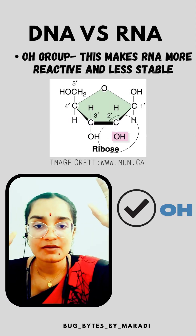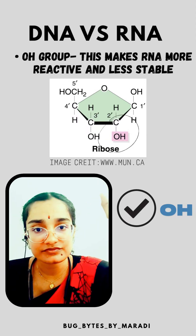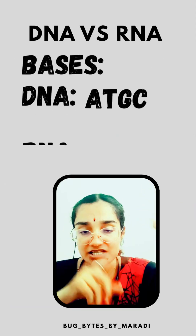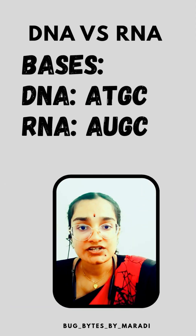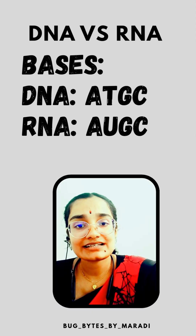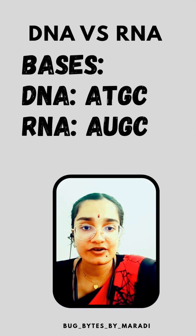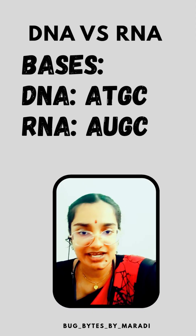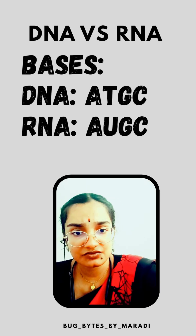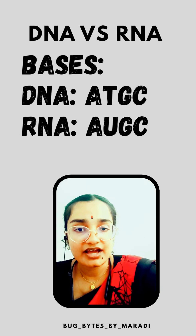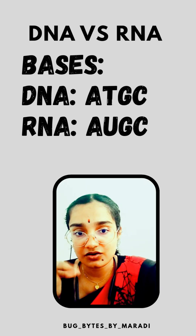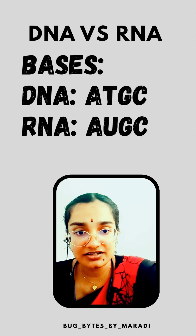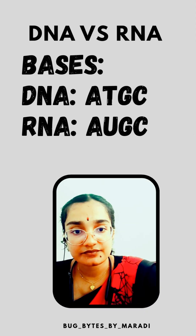Now, what are the bases present in DNA and RNA? DNA contains A, T, G, C — adenine, thymine, guanine, and cytosine. In RNA, instead of thymine, there is uracil — so RNA contains A, U, G, C: adenine, uracil, guanine, and cytosine.